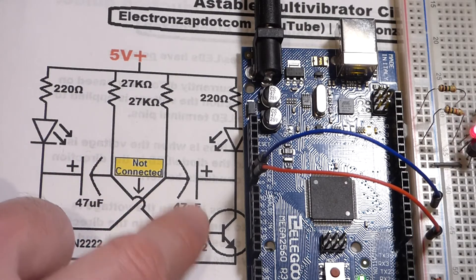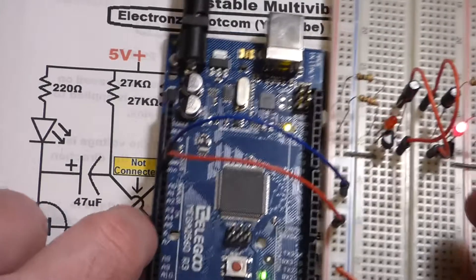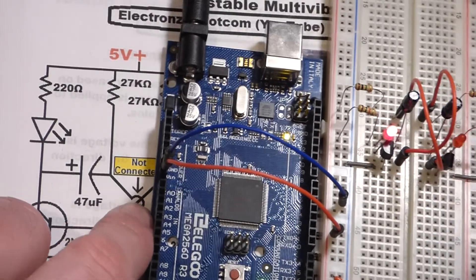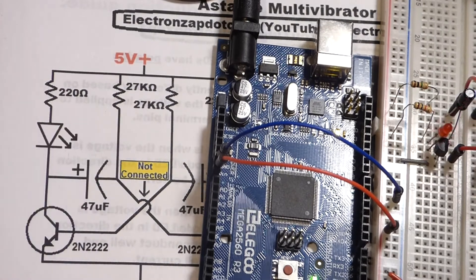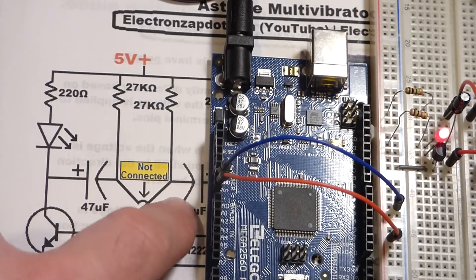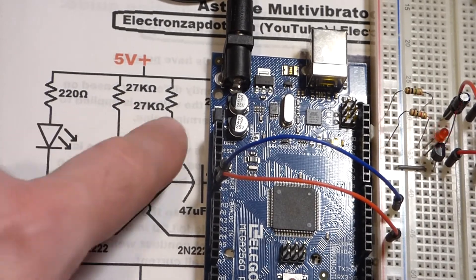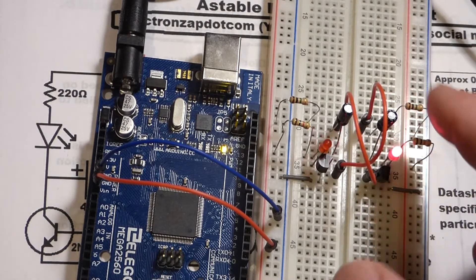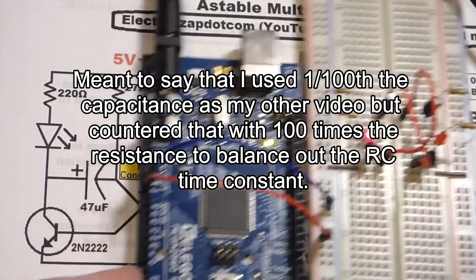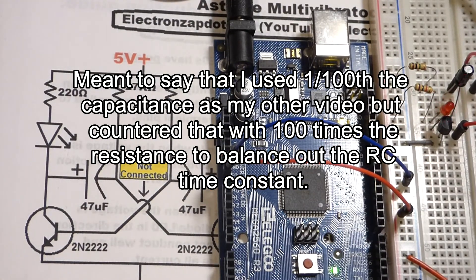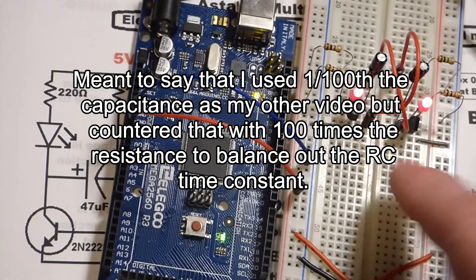I think it's flashing the same speed as the other video I did even though I used different value components, but I adjusted it using math. The other circuit had 10 kilohm resistors and 100 microfarad capacitors. I replaced the 100 microfarad capacitors with 1 microfarad capacitors, so that's 1/100th of the capacitance. Since I had 1/100th of the capacitance, I increased the resistance. Instead of 10 kilohm resistors I used 100 kilohm resistors. Using lower capacitance but more resistance by the same fraction, the RC time constant held the same.